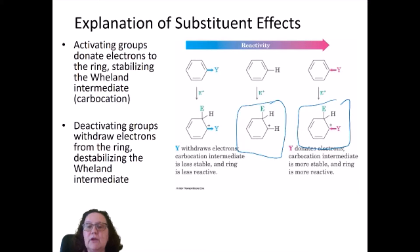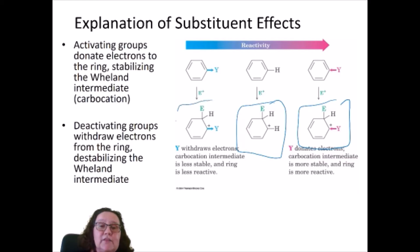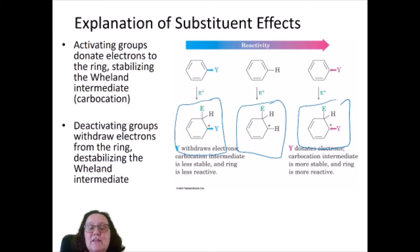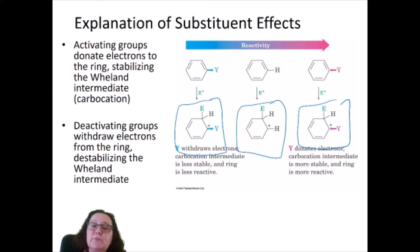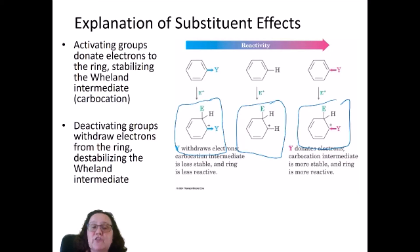That intermediate will be more stable and the ring will be more reactive than if that ring was a simple benzene ring. If you have a substituent that withdraws electrons from the ring, then it's making it more difficult to stabilize that carbocation. That Wheland intermediate will be less stable and that ring will be less reactive than if it were benzene on its own. Substituents that donate charge to the benzene ring will make the reaction more reactive, while substituents that withdraw electrons destabilize that carbocation, making the reaction more difficult.